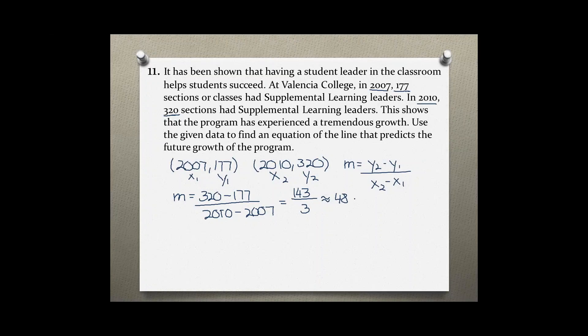I believe it's 47.666 something like that. So 48, now knowing the slope and picking either one of these two points, we can use the point-slope form of an equation to write our equation, which is y minus y1 equals mx minus x1. So plugging in our values, we have y minus 177 equals 48 times x minus 2007.